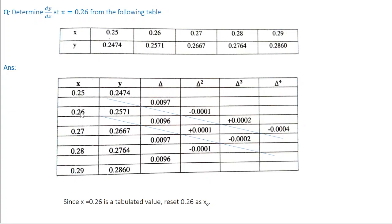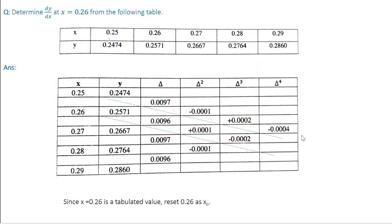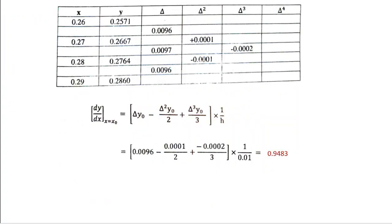We rewrite the table by eliminating all the first diagonal group entries that are no longer needed. By setting x = 0.26 as x₀ and rewriting the table, we reduce the problem — the previous table had a fourth-order difference term, but now we have only up to the third-order difference, decreasing the number of terms in our expression. This gives us Δy₀, Δ²y₀, and Δ³y₀ ready for substitution.